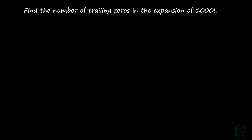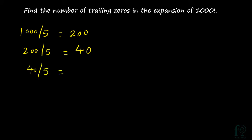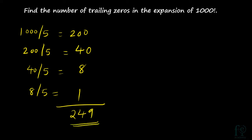Third question: find the number of trailing zeros in the expansion of 1000 factorial. Whatever huge the number is, you can easily find out using this method. 1000 divided by 5 gives 200. Again 200 divided by 5 gives 40. Keep on dividing by 5 recursively until you get a number less than 5. So 40 divided by 5 gives 8 — still greater than 5. Then 8 divided by 5 equals 1, so you stop. Your answer is 200 plus 40 plus 8 plus 1, which is 249 trailing zeros in 1000 factorial.